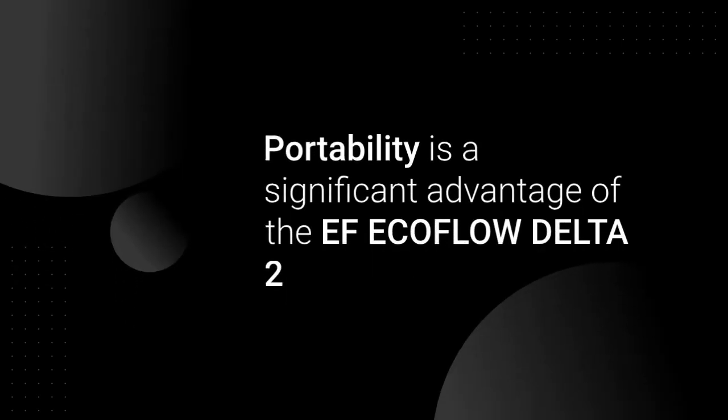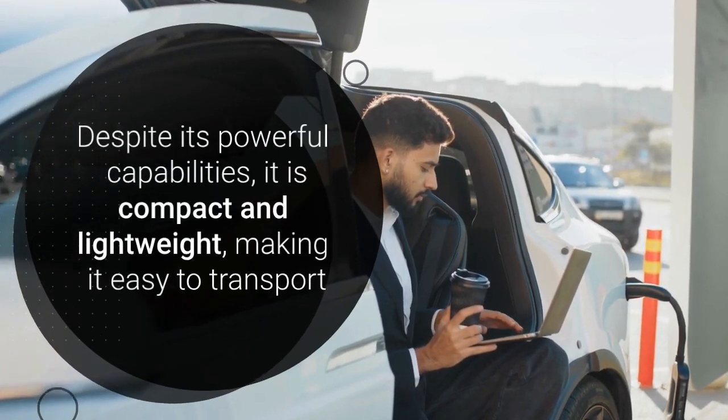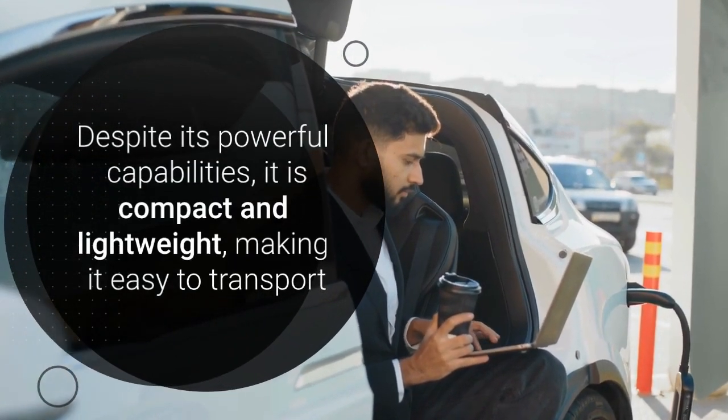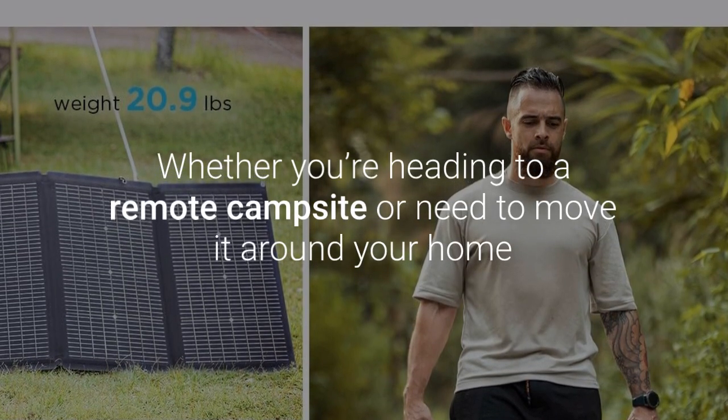Portability is a significant advantage of the EF EcoFlow Delta II. Despite its powerful capabilities, it is compact and lightweight, making it easy to transport. Whether you're heading to a remote campsite or need to move it around your home, this generator is designed for convenience.